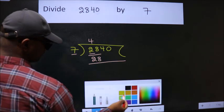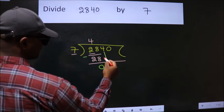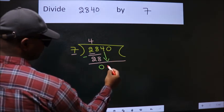Now we should subtract. We get 0. After this, bring down the beside number. So, 4 down.